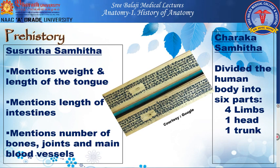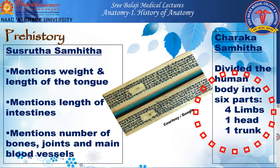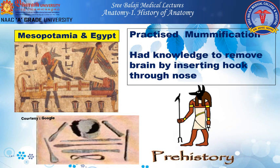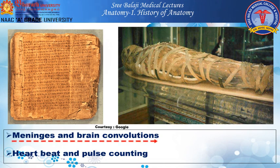The Charaka Samhita divided the human body into 6 parts: 4 limbs, 1 head and 1 trunk. Looking at Egypt, they practiced mummification and had the knowledge to remove the brain using a hook through the nose. They also described the meninges, brain convolutions, the heartbeat and pulse counting.